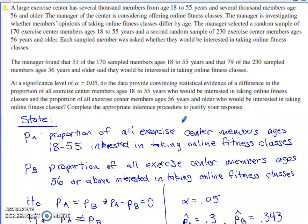If you've practiced this you've got almost all of the things that would be in the scoring guidelines for an inference problem being hit throughout your process. For State, I have two proportions here. I'm going to let p sub A represent the proportion of all exercise center members age 18 to 55 interested in taking the online fitness classes. P sub B is going to be the same proportion but for those age 56 and up.